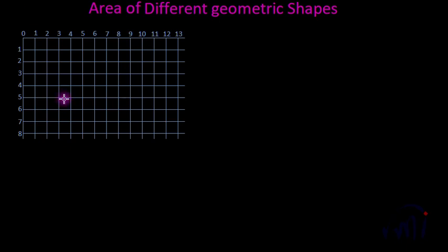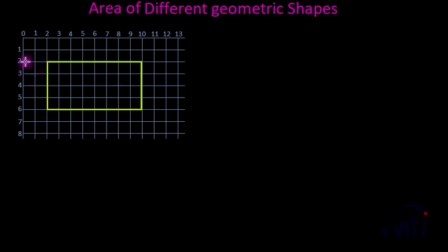Let's start with rectangle. If I draw a rectangle whose length is 10 minus 2 = 8 units and breadth is 6 minus 2 = 4 units, to count the number of squares this rectangle has, we count the number of squares along the length to form a row, then count how many such rows are there, and multiply them to get the area.